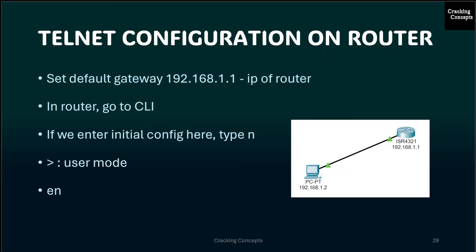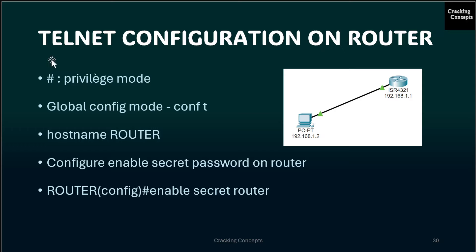PC configuration is done. Next we move on to the router, go to the command line interface, and type N for the initial configuration. We enter the user mode, then type EN to enter privilege mode. Then we type conf t to start global configuration. We assign the hostname ROUTER in caps lock. After that, we assign a password to the router using the command enable secret, and the password is 'router'.